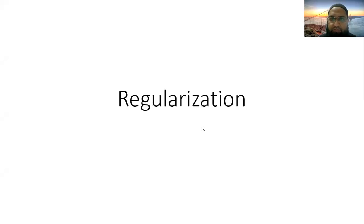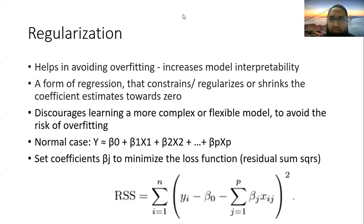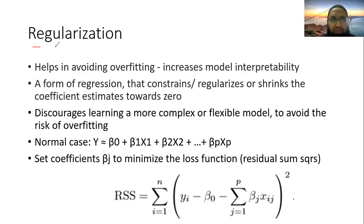As-salamu alaykum and welcome to today's lecture. Today we are going to be discussing the very important topic of regularization in machine learning. In machine learning, we have to make the bias-variance trade-off. A high bias means that the model is underfitting, and high variance means that the model is overfitting. Regularization is an activity which helps us avoid overfitting, specifically the high variance situation.